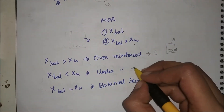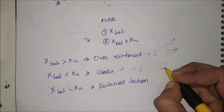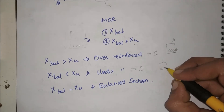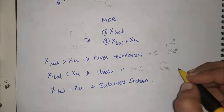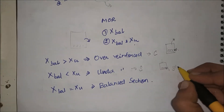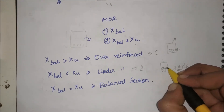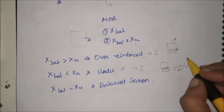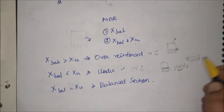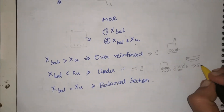In an under-reinforced section, steel fails first — the amount of steel provided is less, so when the structure is loaded, steel reaches its critical value before the concrete. When steel yields, the structure will bend visibly, giving warning to people below. Therefore the under-reinforced structure is considered safe.